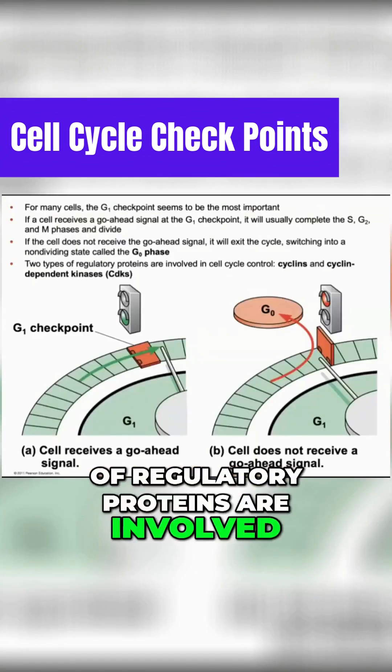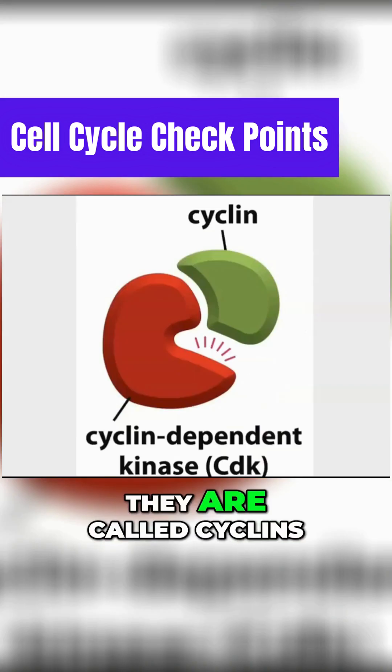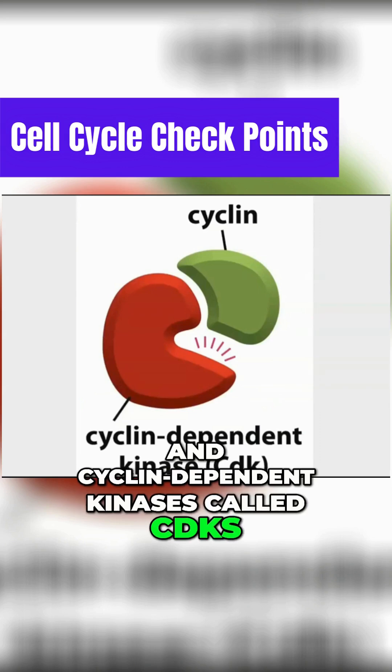Two types of regulatory proteins are involved in cell cycle control. They are called cyclins and cyclin-dependent kinases called CDKs.